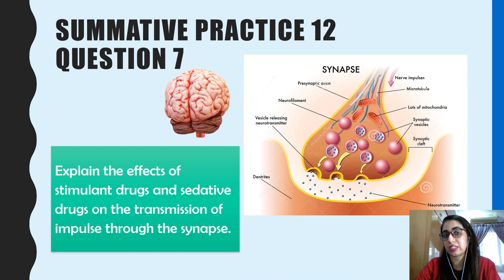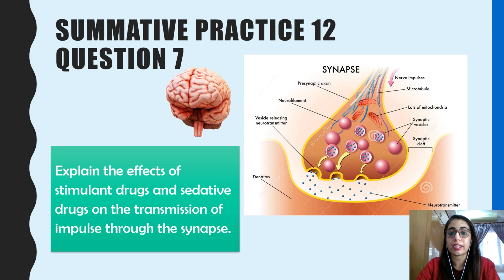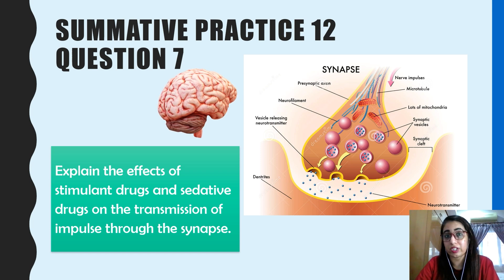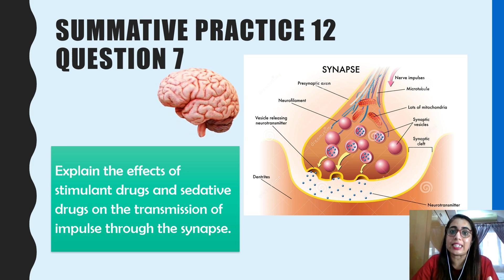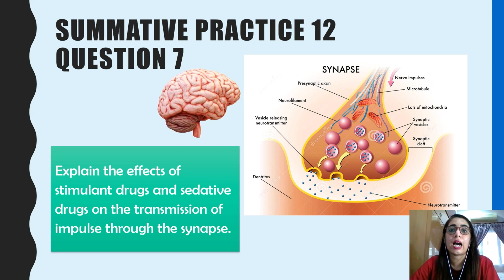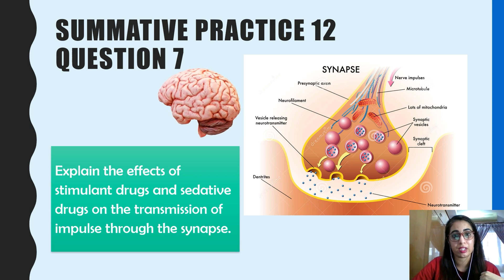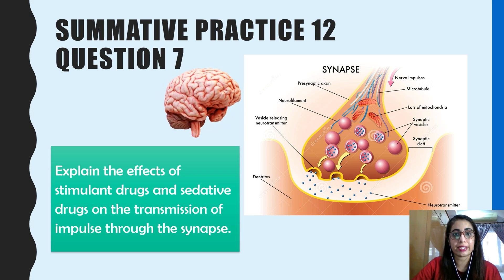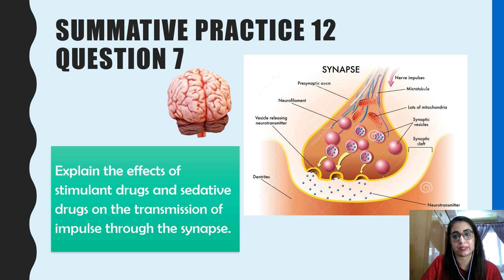Summative Practice 12, Question 7: The effect of stimulant and sedative drugs on impulse transmission through the synapse. Stimulants such as cocaine prevent the removal of neurotransmitters, producing intense euphoric feelings followed by depression, and increase impulse transmission causing increases in heartbeat and respiration rates. Depressants such as heroin retard and slow down the activities of the nervous system, slowing production of neurotransmitters and reducing the rate of heartbeat and respiration. The individual experiences temporary excitement and satisfaction followed by depression.